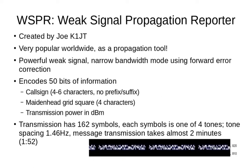WSPR — the Weak Signal Propagation Reporter mode — was created by Joe K1JT. It's a very popular mode used mainly as a propagation tool. It has very powerful narrowband forward error correction giving a very high signal-to-noise ratio, and it can be copied even below the noise. It encodes 50 bits of information including the callsign of four to six characters, a four-character grid square with about 100-mile resolution, and a transmission power in dBm. The transmission is made up of 162 symbols, each one of four tones spaced by only 1.46 Hz, giving a 6 Hz bandwidth. The message transmission takes 1 minute 52 seconds.